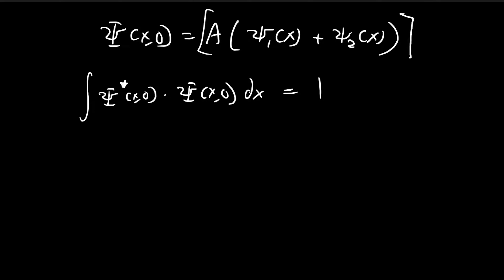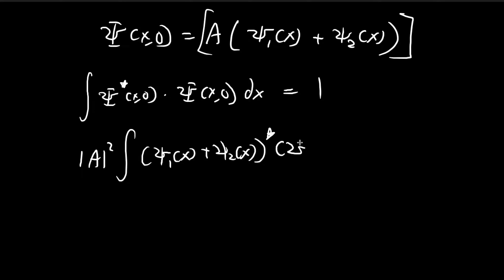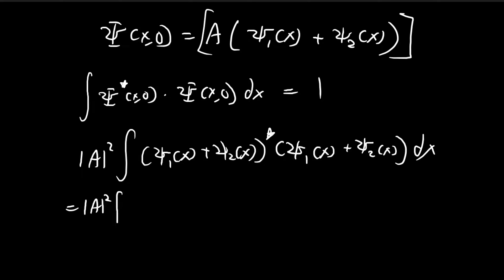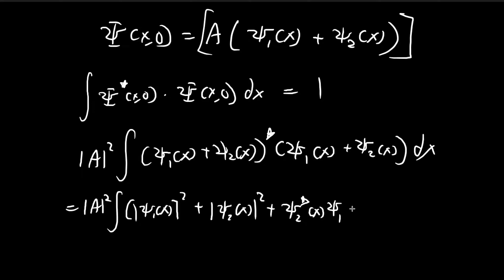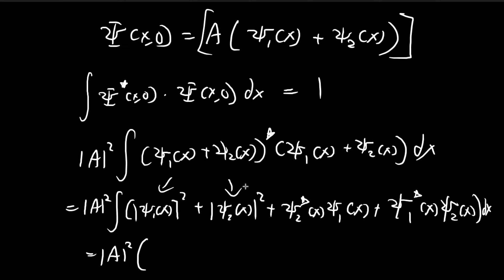So I'm going to take the conjugate and then multiply it by itself. The constant multiplies itself, and then on the inside we have terms we need to integrate. The star signifies the conjugate, which is the notation used in the book. Expanding this, we have the x component of the first stationary state plus x component of the second stationary state, and then the conjugate of the second times the first, and the conjugate of the first times the second dx.